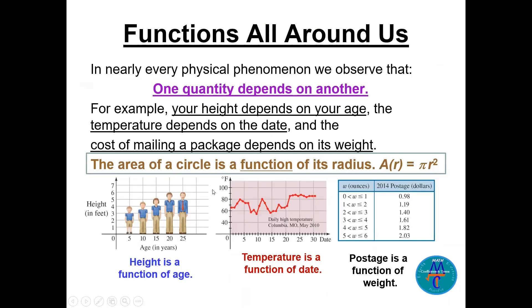Functions we can see everywhere. Function is one quantity that depends on another. For example, your height depends on your age, the temperature depends on the date, and the cost of mailing a package depends on its weight. The area of a circle is a function of its radius. So we can write A(r) = πr².